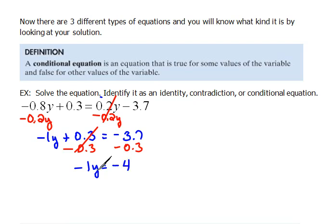Now we still don't want negative y, we want to know what y equals. So to undo that multiplication I'm going to divide both sides by negative 1 and now we have y equals positive 4 as our answer. This is what a conditional equation looks like.